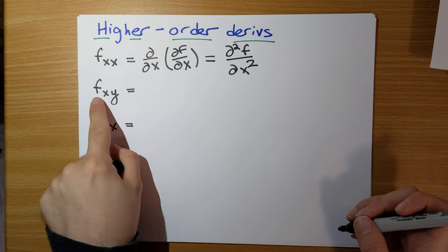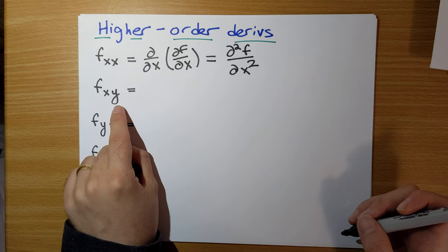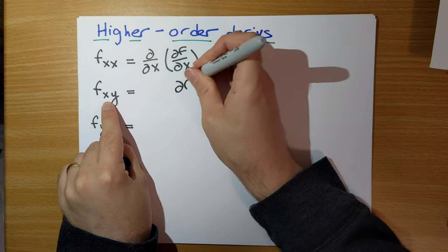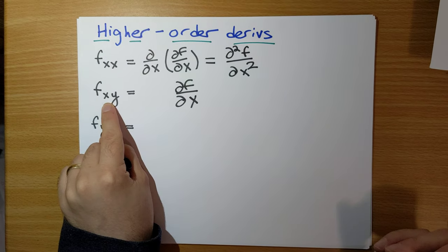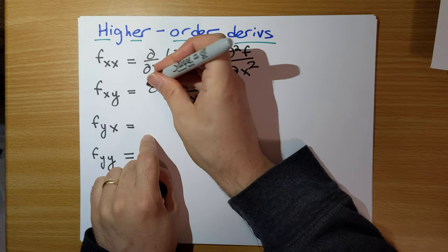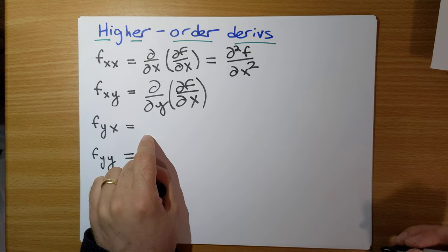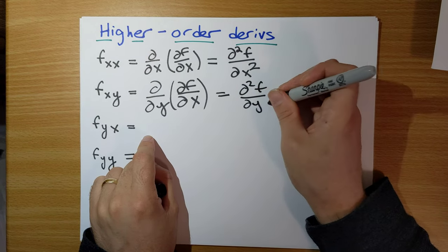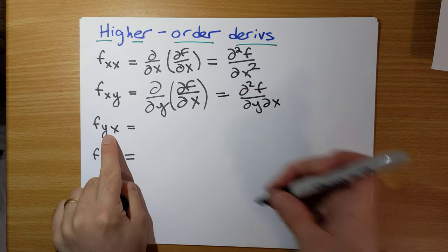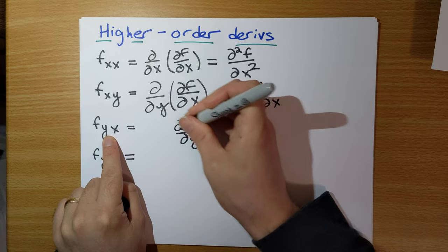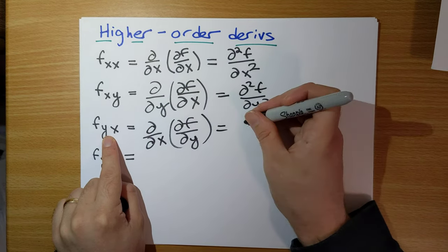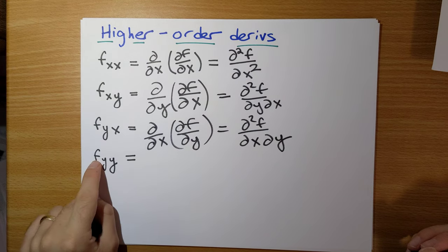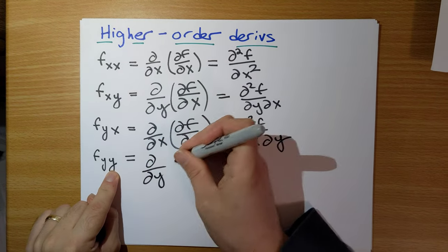The order of subscripts tells you in what order to take the partial derivative. So f sub xy says: first take a partial derivative with respect to x, and then take the partial derivative of that answer with respect to y. We can write this as partial squared f over partial y partial x. f sub yx would be: first take the partial derivative of f with respect to y, and then do the partial derivative with respect to x — partial squared f over partial x partial y. And f sub yy means two partial derivatives with respect to y.